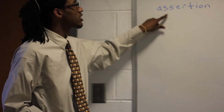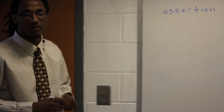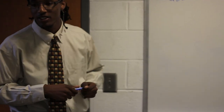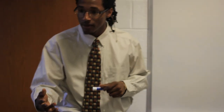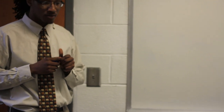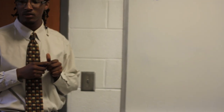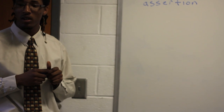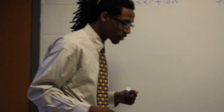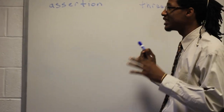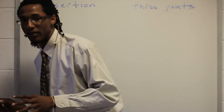Now, raise your hand if you know what an assertion is. Young man, what did you think of an assertion? What's your name? Chauncey. It's a statement where you're basically going out and declaring something — like you're saying that black and white is this or this stuff. Good job. Chauncey is correct. An assertion is a statement. It's what you claim.